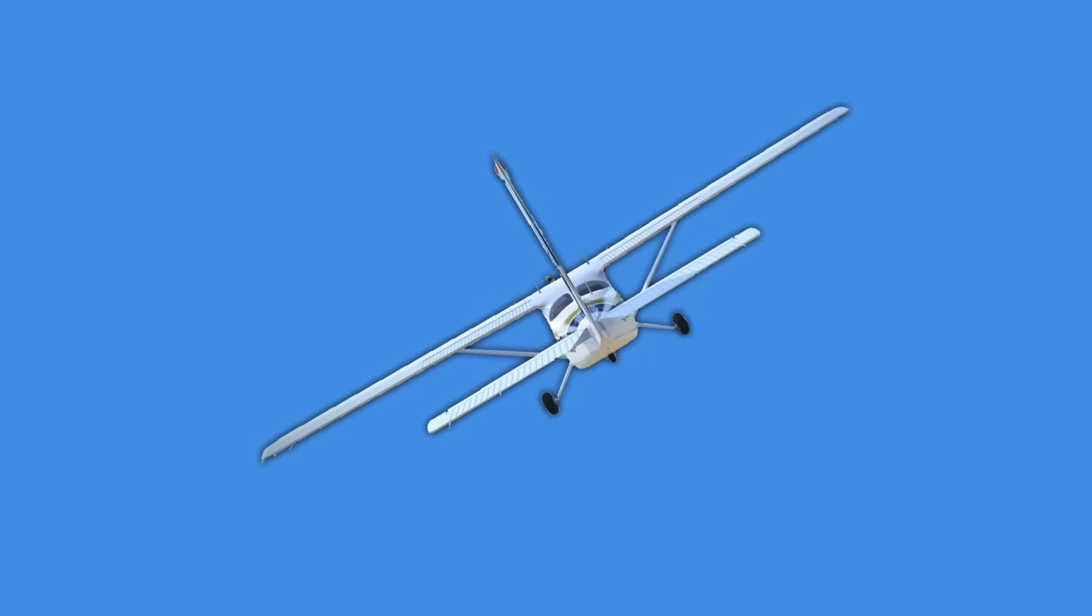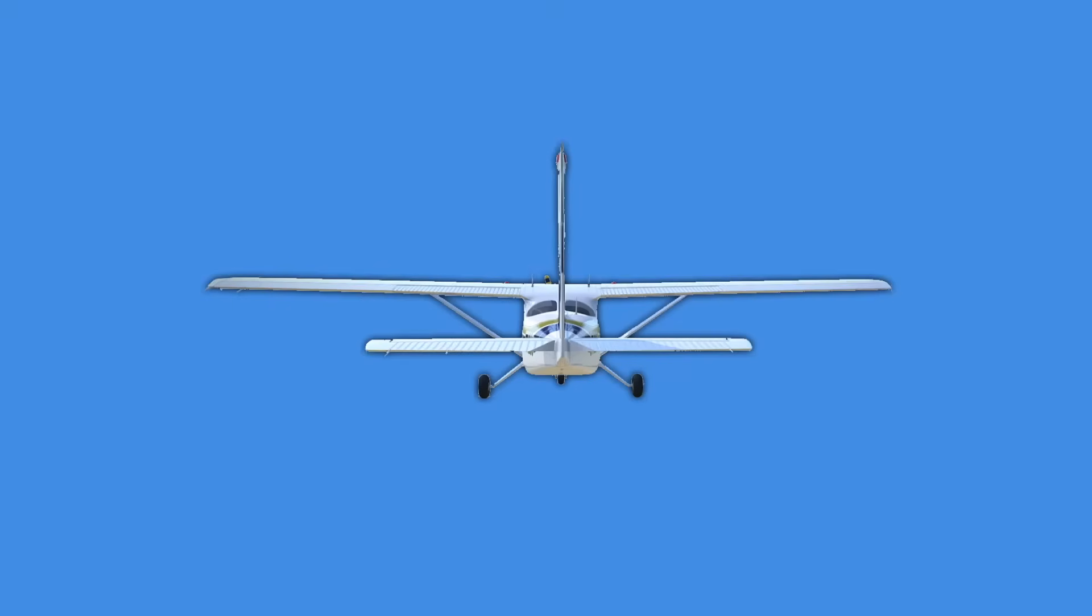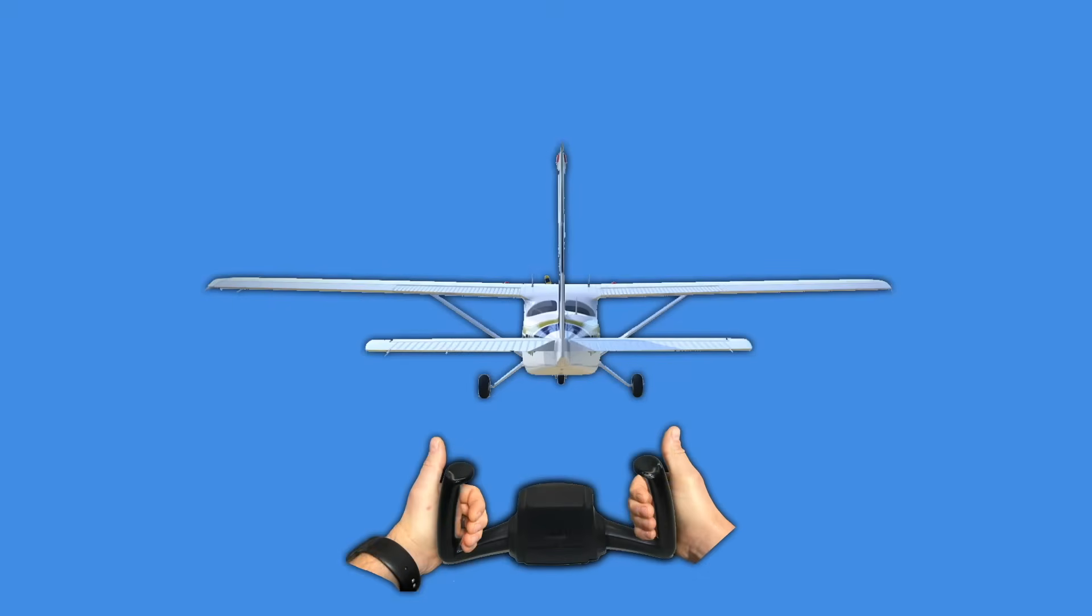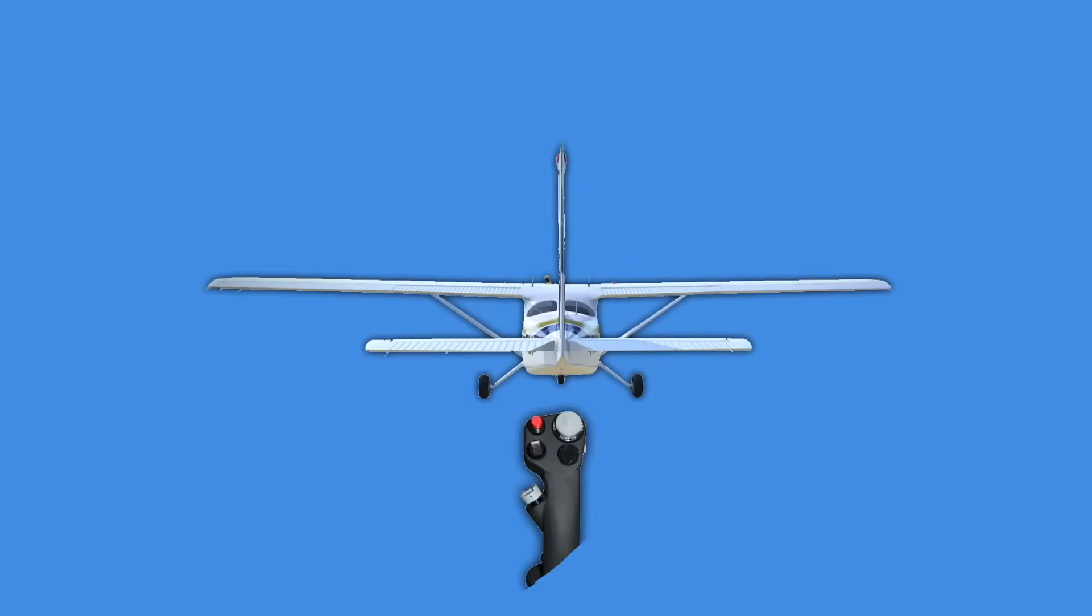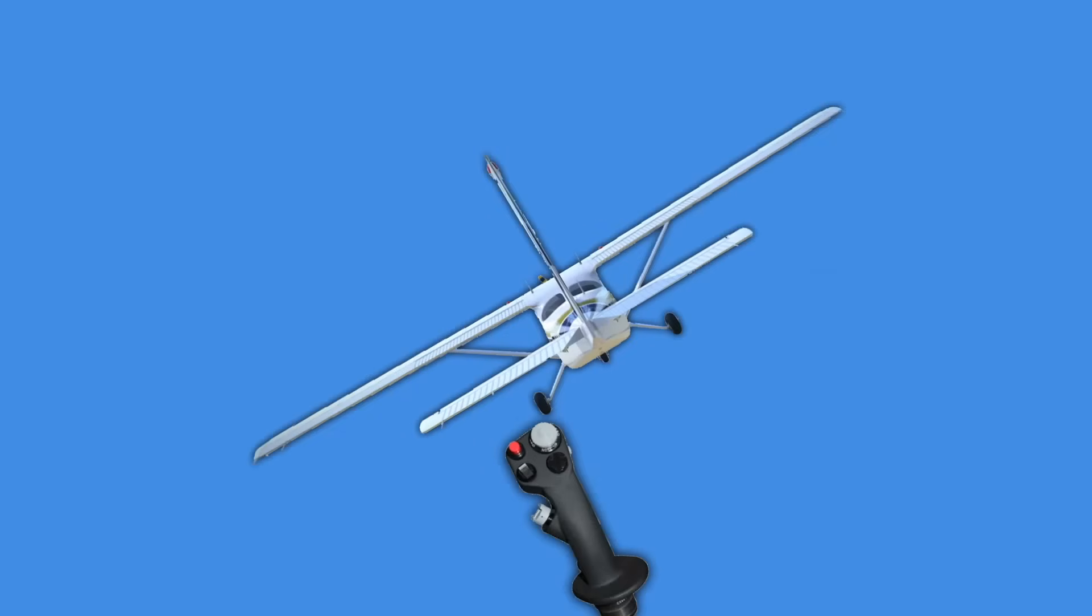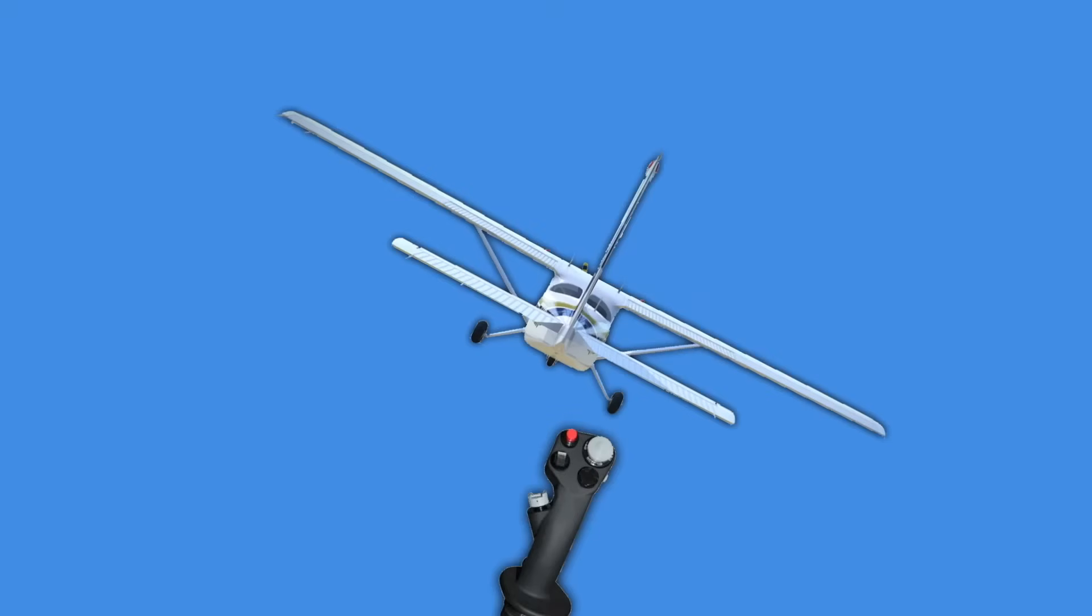Instead we have to bank or roll the airplane along its longitudinal axis to get it to turn and if you remember from one of our last lessons we do this by rotating the yoke left or right depending on which direction we want to go. Keep in mind if you have a stick instead of a yoke moving the stick left and right does the same thing as rotating the yoke.